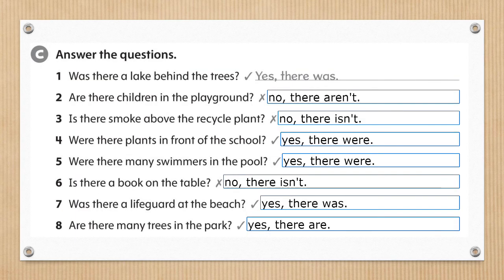The answers for activity C are number 2: no, aren't. Number 3: no, there isn't. Number 4: yes, there were. Number 5: yes, there were. Number 6: no, there isn't. Number 7: yes, there was.